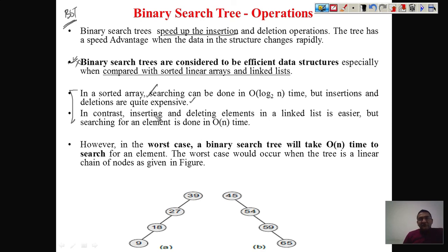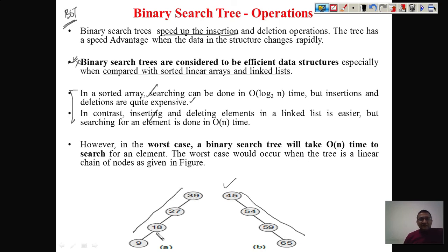So both arrays and linked lists have their advantages and limitations. Binary search tree gives us the advantages of both approaches. The worst case for BST only occurs when data is inserted in sorted order — creating a tree that extends in only one direction, like a sequence 45, 54, 59, 65. In general, when data is random, the binary search tree provides better performance for insertion, deletion, and searching.